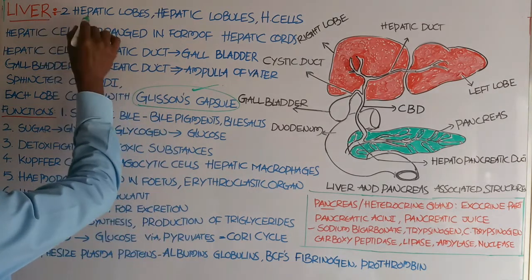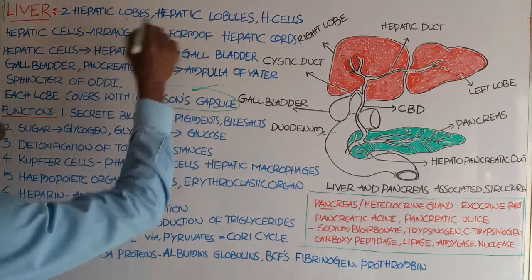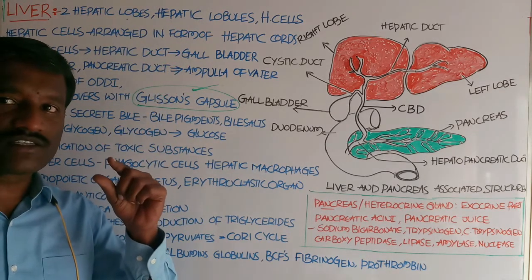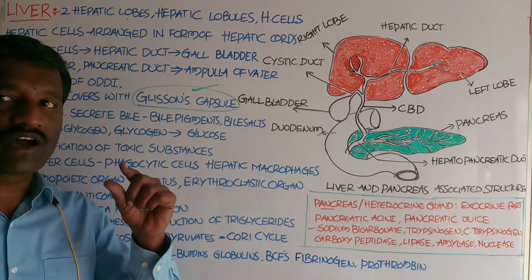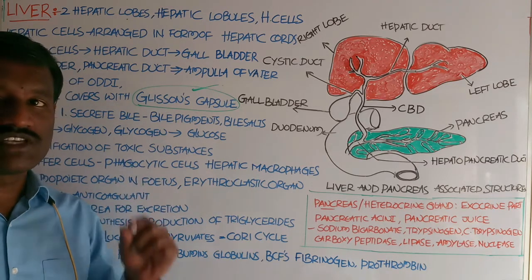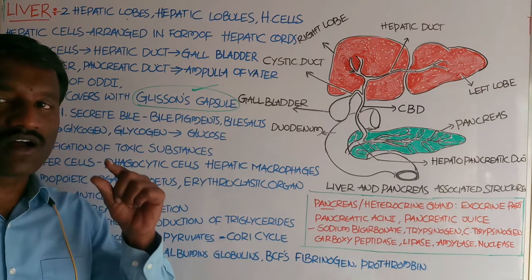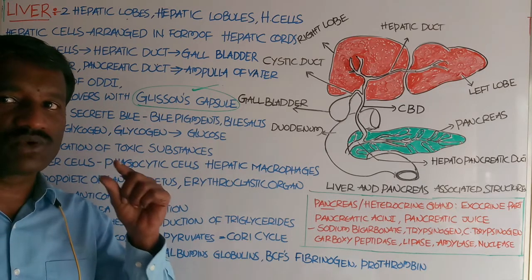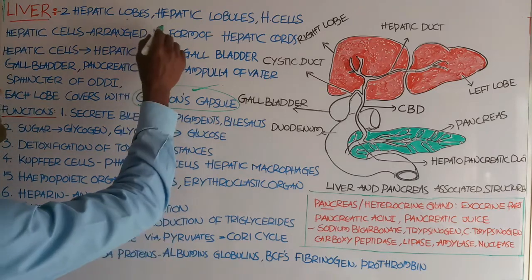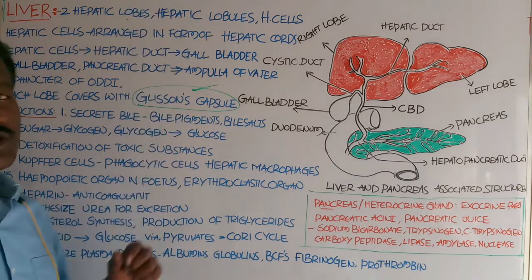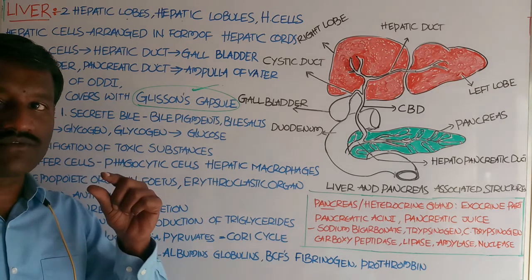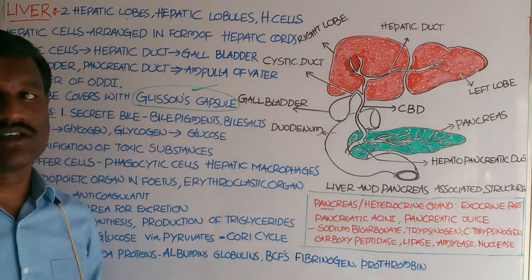The liver consists of two hepatic lobes, and each lobe consists of a large number of hepatic lobules. These hepatic lobules are the structural and functional units of the liver, and they are arranged in the form of hexagonal structures.